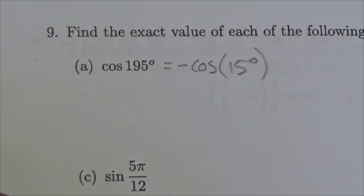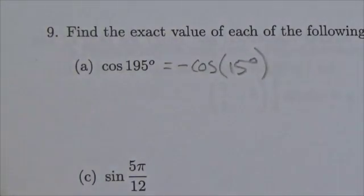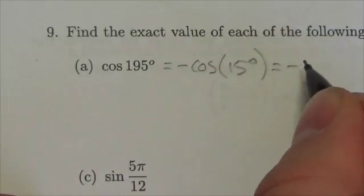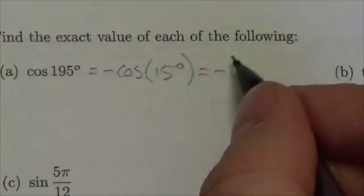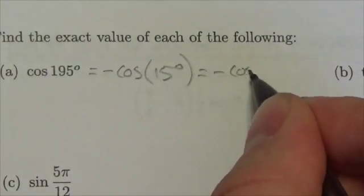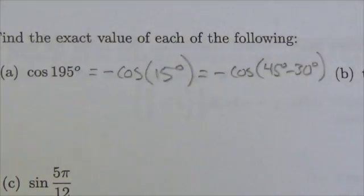Okay, good. That's a good start here. Now, we're looking at a more reasonable angle here. 15. How do I get 15 from the special angles? Well, there's a couple of ways to do it. But what I'll do here is the cosine of 45 minus 30 degrees.